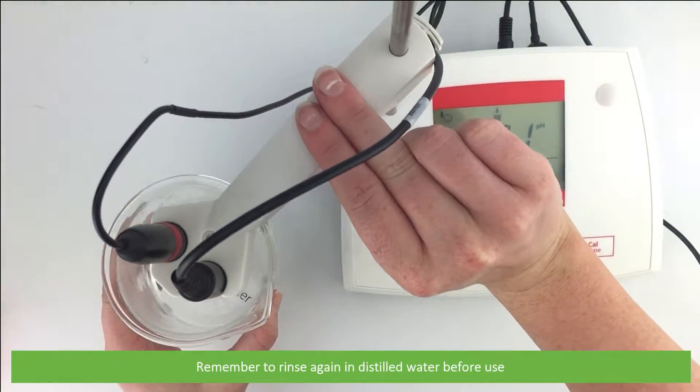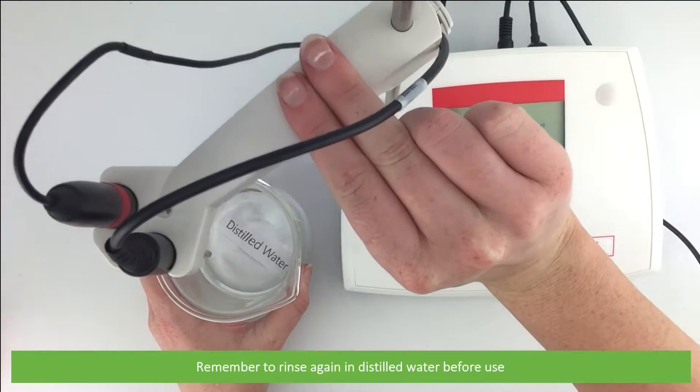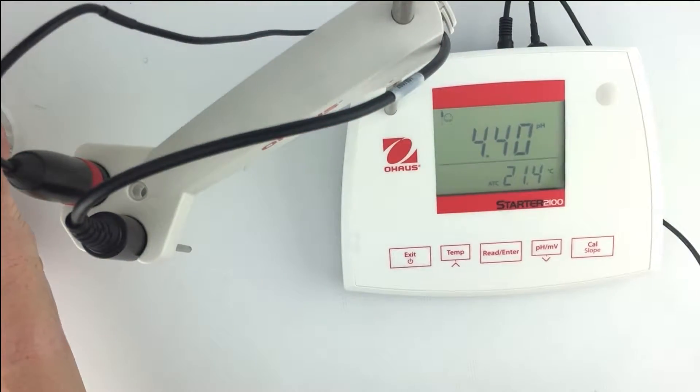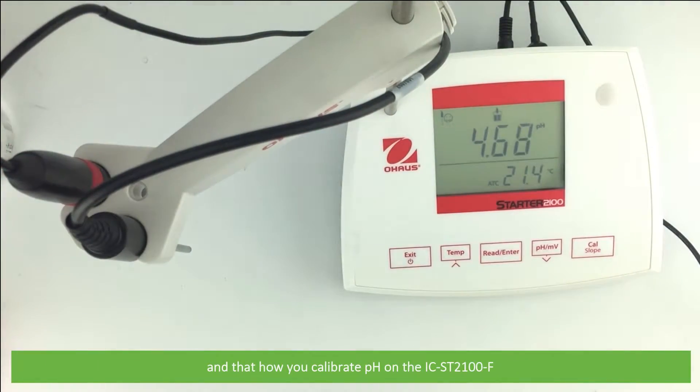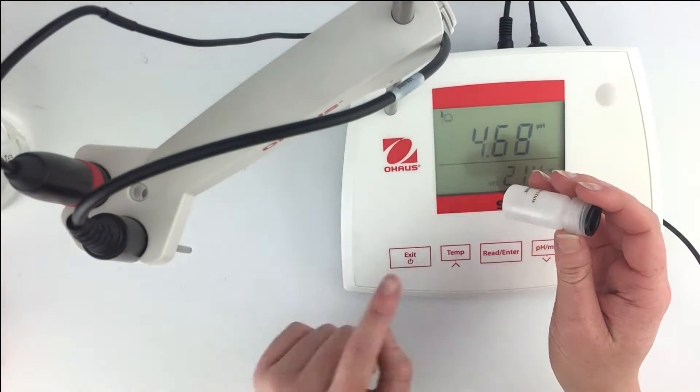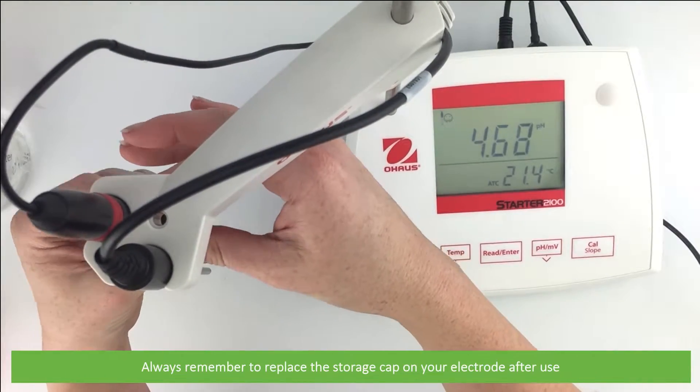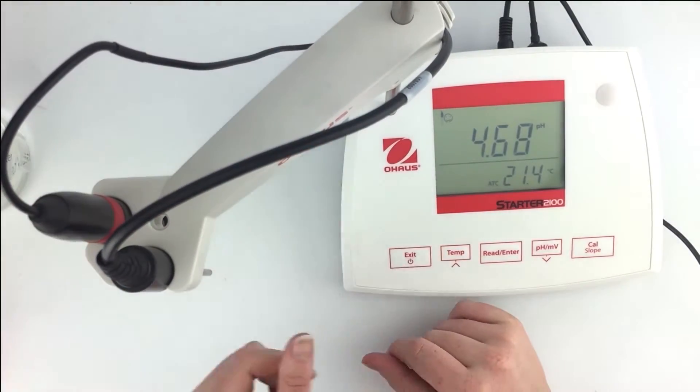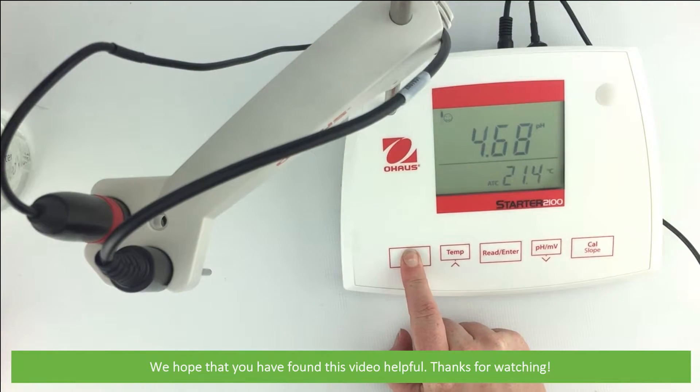Remember to rinse again in distilled water before use. And that is how you calibrate pH on the IC-SD2100F. Always remember to replace the storage cap on your electrode after use. We hope that you found this video helpful. Thanks for watching.